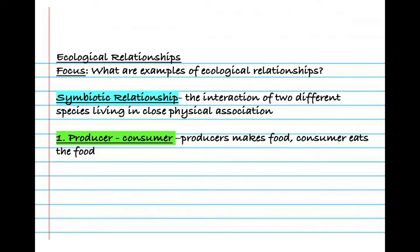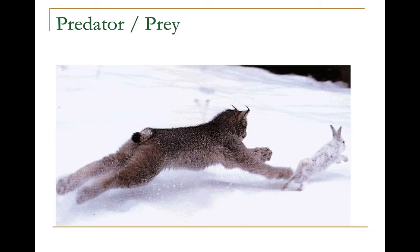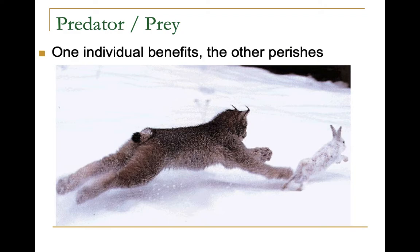Our second type of symbiotic relationship is a predator-prey relationship. Fairly straightforward — our predator is going to hunt our prey. This is going to benefit our predator and harm our prey as it gets eaten for food.